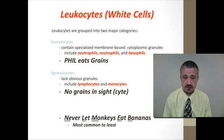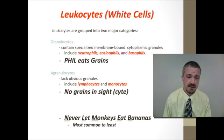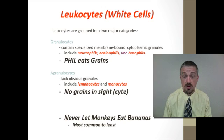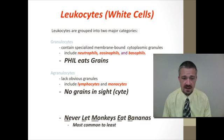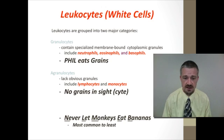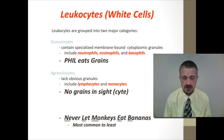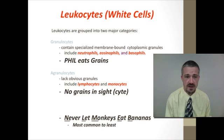Agranulocytes include lymphocytes, of which there are several types, as well as monocytes. The saying 'no grains in sight' helps remember these. To remember most common to least common, use 'never let monkeys eat bananas': neutrophils, lymphocytes, monocytes, eosinophils, then basophils.